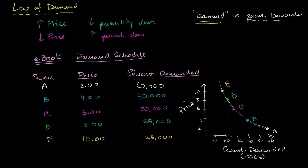We've talked a little bit about the law of demand, which tells us all else equal, if we raise the price of a product, then the quantity demanded for that product will go down — common sense. If we lower the price, then the quantity demanded will go up. And we'll see a few special cases for this.